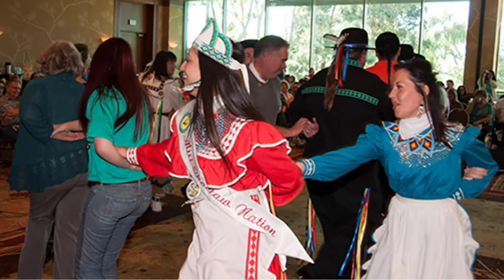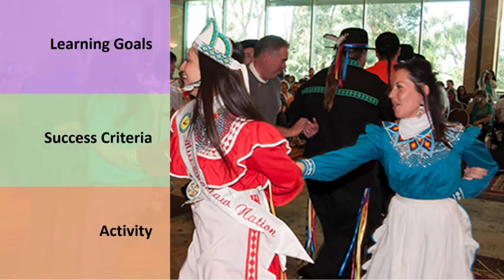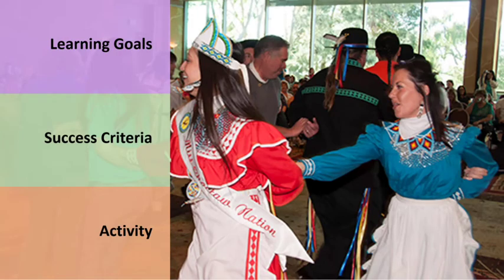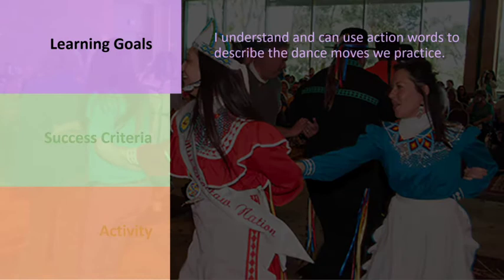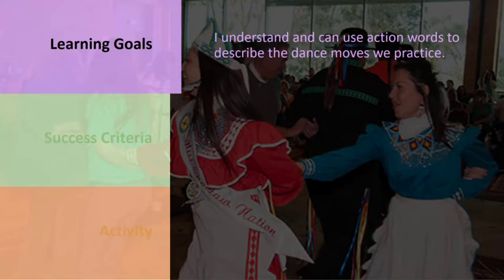Now let's look at an example that includes learning goals, success criteria, and learning activities. The learning goal comes first — a general statement of what students are expected to learn. For this lesson, the teacher has decided to focus on action words in the context of learning a dance, to provide an opportunity for students to focus on this language feature as well as further develop cultural knowledge.